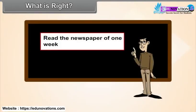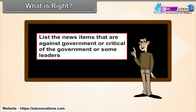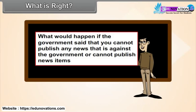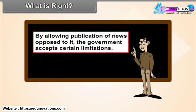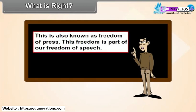Read newspapers for one week. List the news items that are against the government or critical of the government or some leaders. What would happen if the government said that you cannot publish any news that is against or critical of the government? By allowing publication of news opposed to it, the government accepts certain limitations. This is also known as freedom of the press, which is part of freedom of speech.